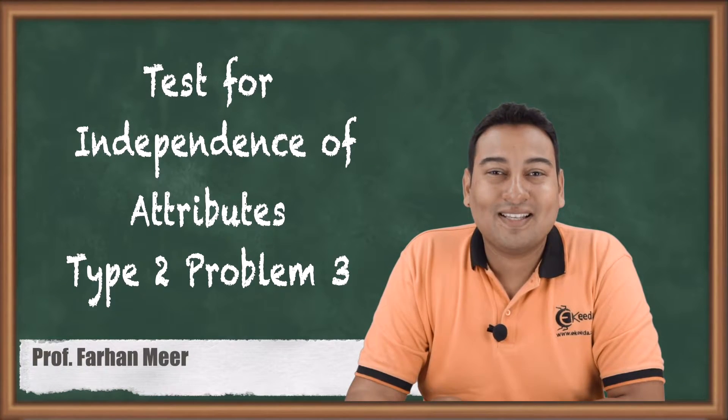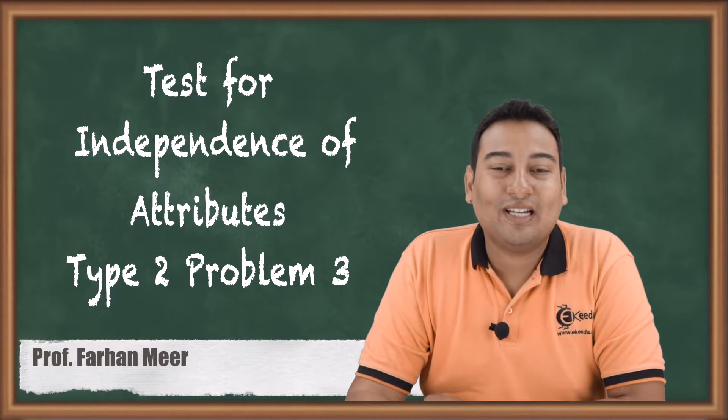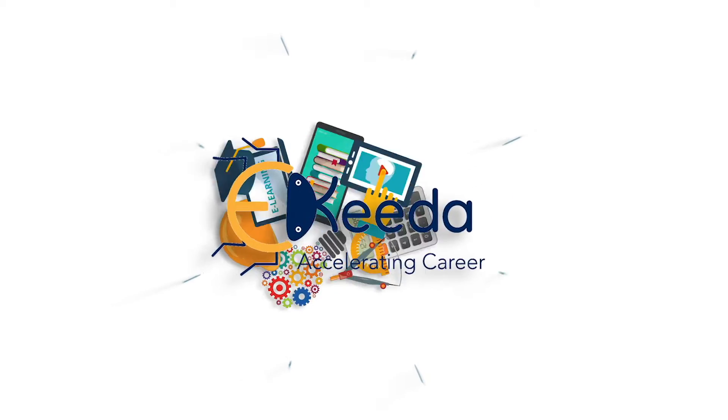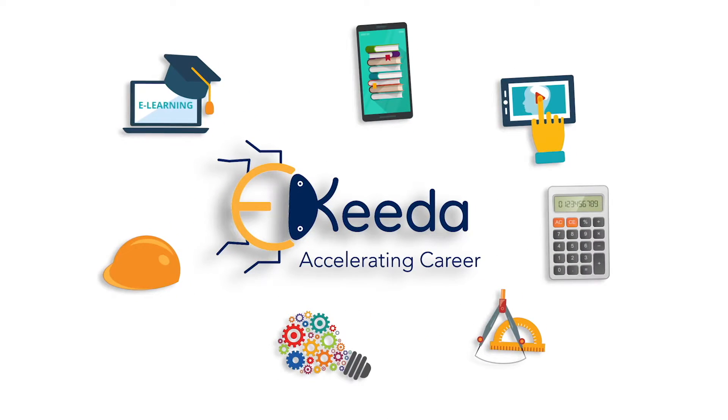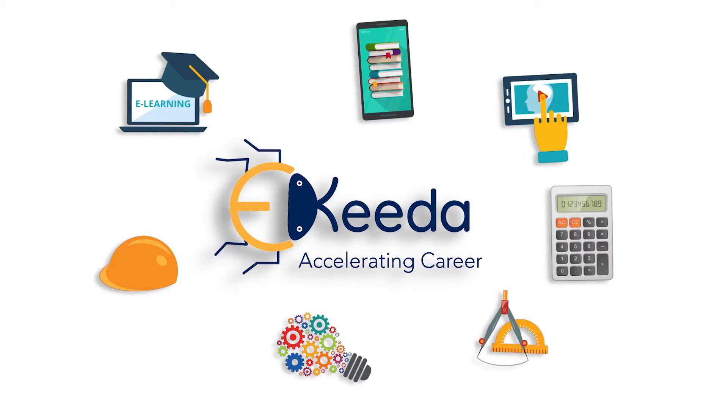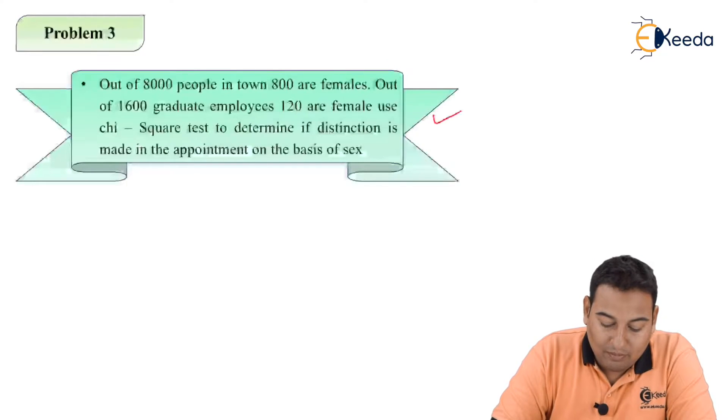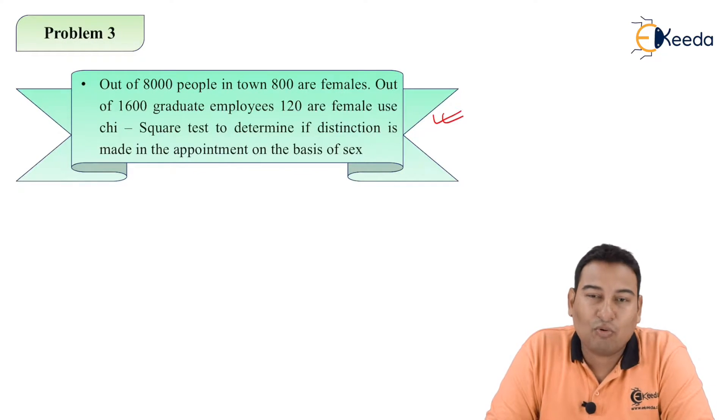Hello friends, in this video we'll be discussing chi-square test type 2, that is test for independence of attribute. This is our third example. Let's have a look on the given problem. The problem is given and the table is not provided to us, we need to make a table.